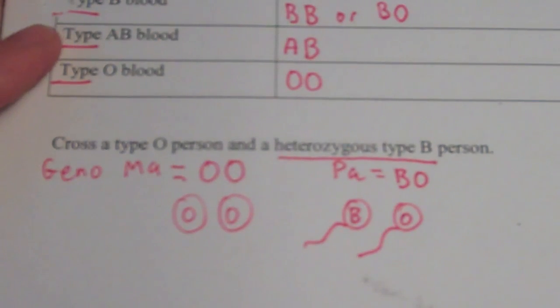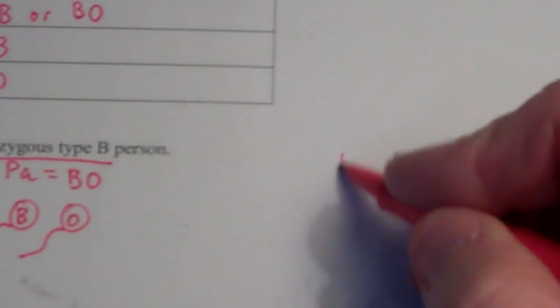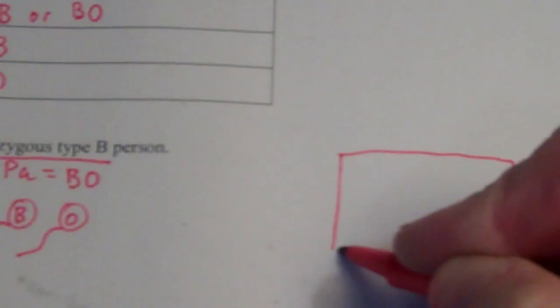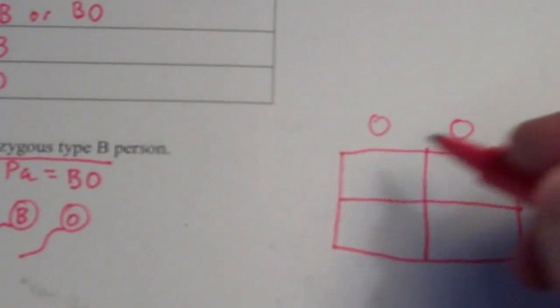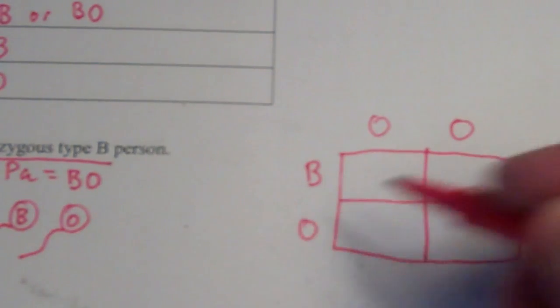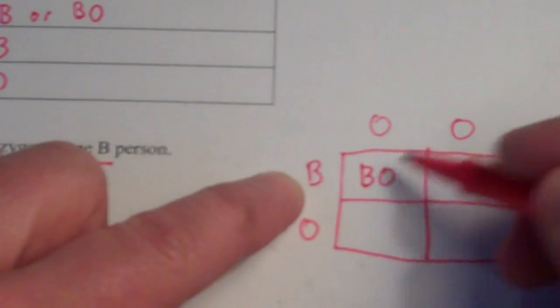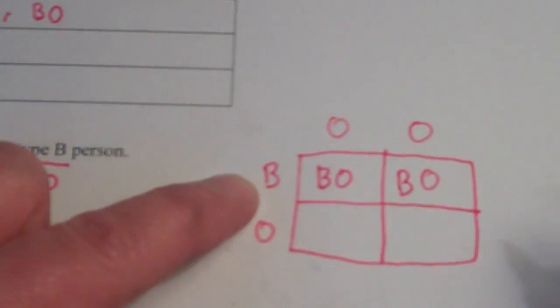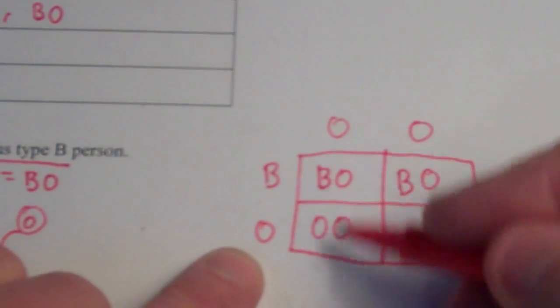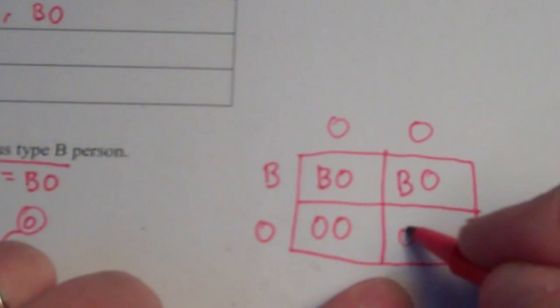Next step, do your Punnett square. Make it nice and big. I'm going to put my eggs here, my sperm here. Alright, join them together. My first kid is going to have genotype BO. Second kid, BO. Third kid, OO. Fourth kid, OO.